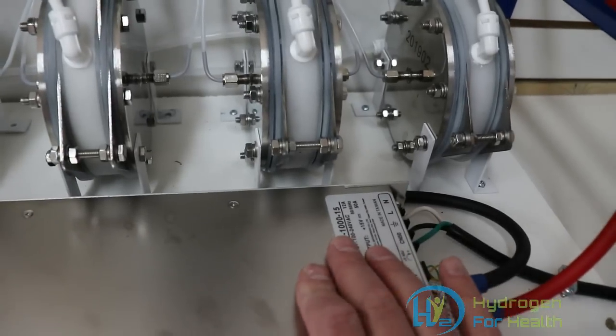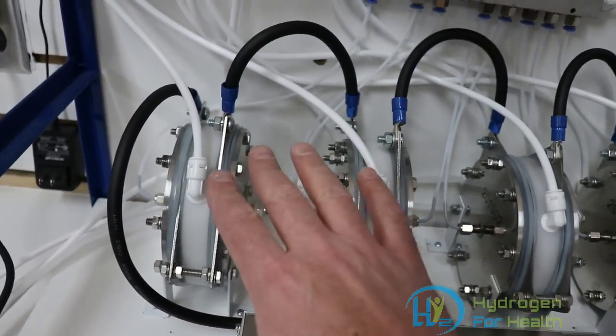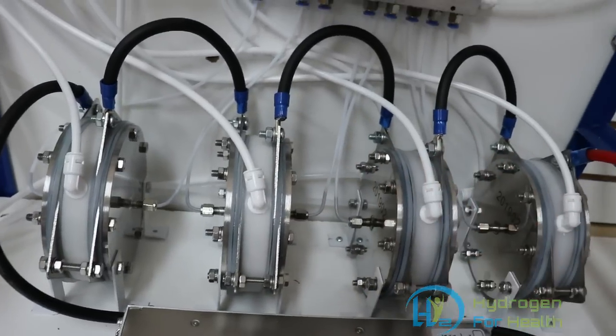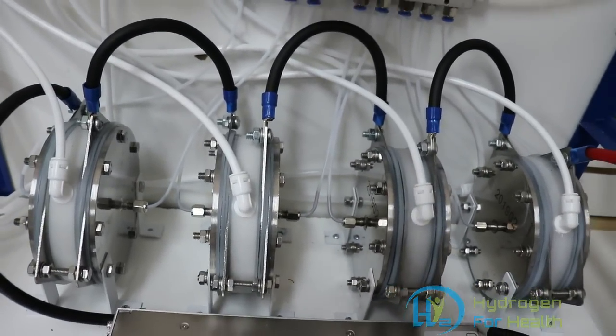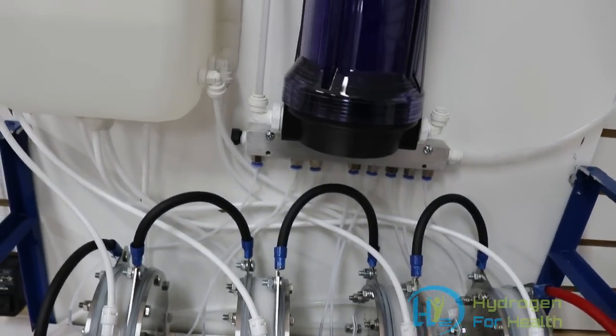When I get the 24 volt power supply, we can up this to over three liters a minute, which will be able to generate more gas and be able to compress faster.